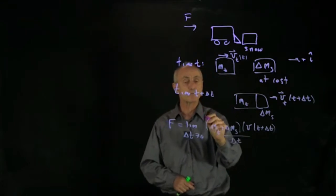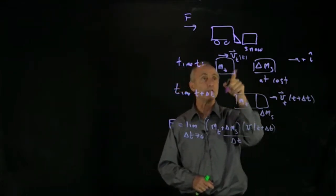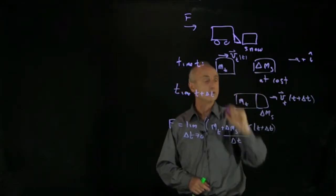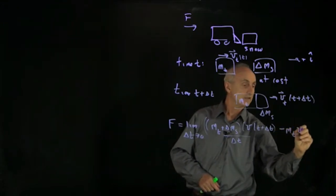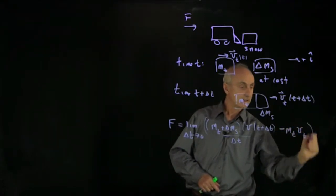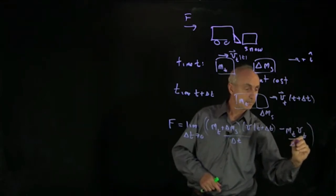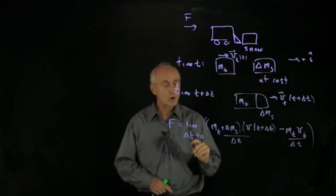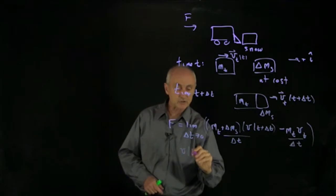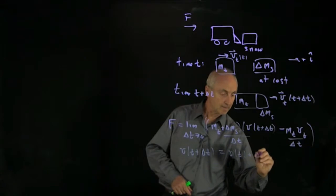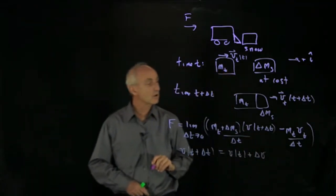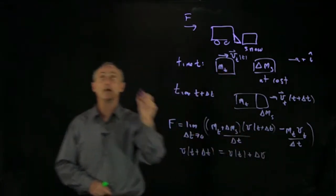And we have to subtract from this the momentum at time t. The snow is at rest. Only the truck is moving. So we have minus mt vt divided by delta t. Now, as usual, we're going to say that the truck has changed its velocity in this interval.